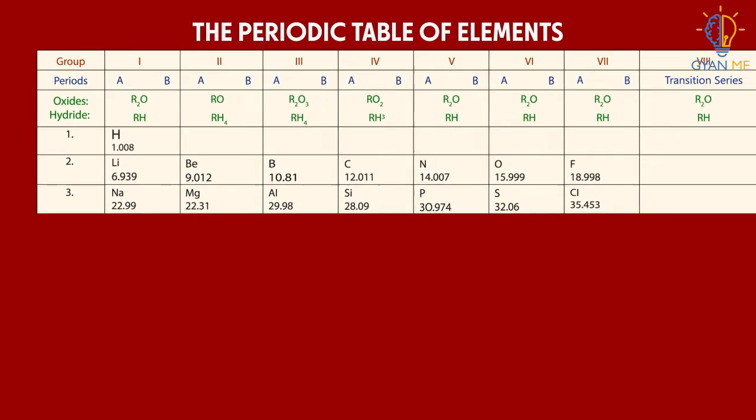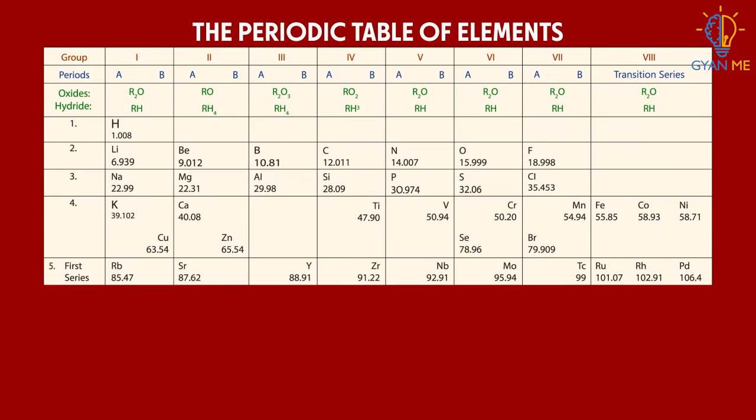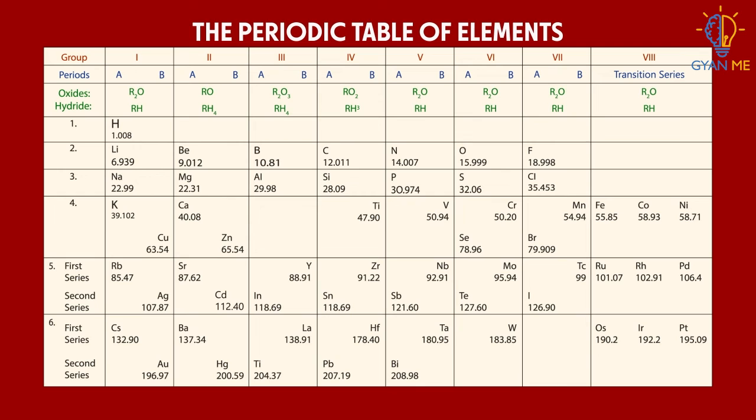In this manner, Mendeleev arranged all 63 elements in the table forming rows and columns.